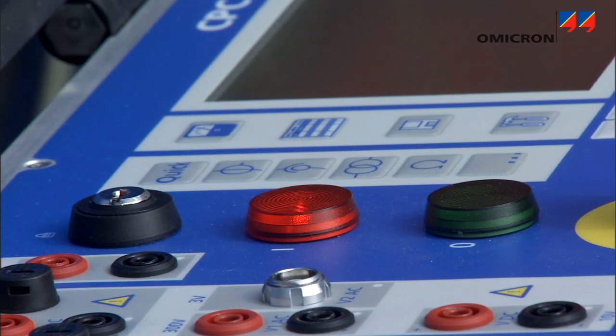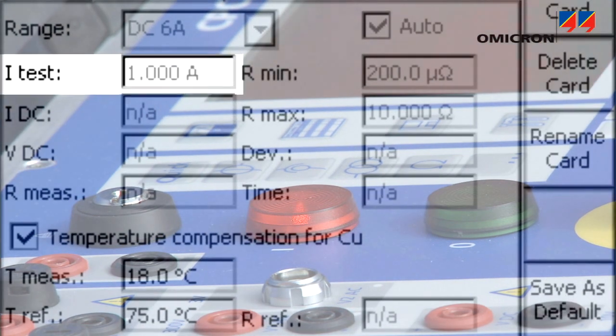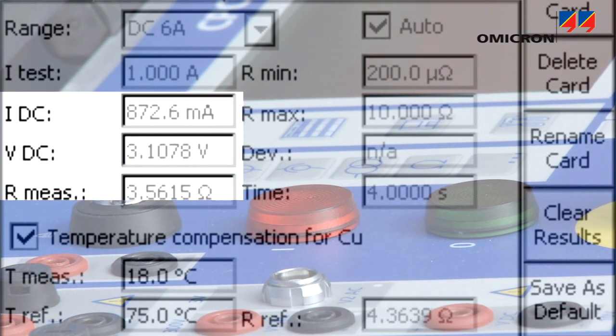With the CPC-100, current is injected into the winding. Measuring current and voltage, the CPC displays the resistance value.